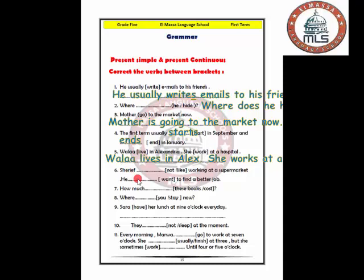We can get the negative form of present simple by using don't or doesn't. Sheree is a singular noun so we should use doesn't. Sheree doesn't like. He wants to find a better job. Number seven: how much do these boxes cost? A fact.